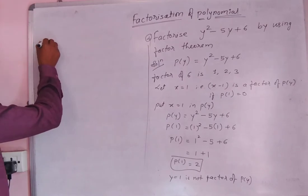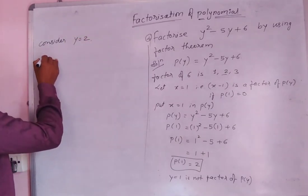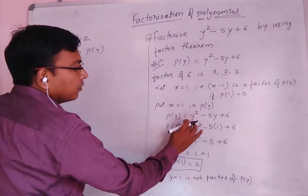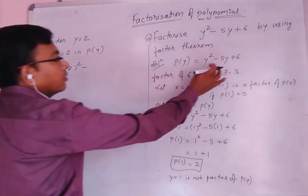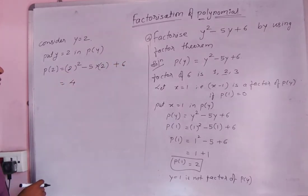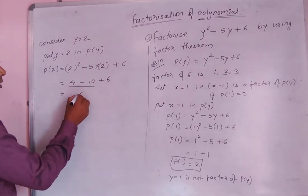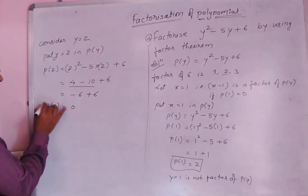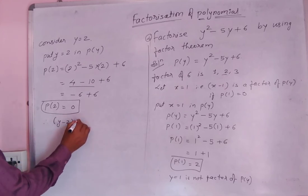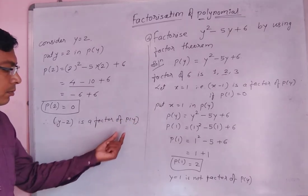Now consider the second number, which is 2. Put y equal to 2 in p of y. p of 2 equals 2 squared minus 5 times 2 plus 6, which gives 4 minus 10 plus 6 equals 0. So p of 2 is equal to 0, which means y minus 2 is a factor of p of y.